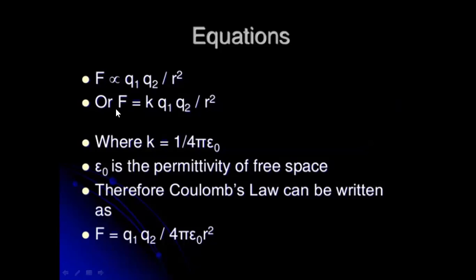If we further simplify, we have K as your constant — Coulomb's constant — multiplied with Q1 and Q2 over the distance of separation squared. Coulomb's constant simplifies to 1 over 4 pi epsilon-naught, where epsilon-naught is the permittivity of free space. Therefore, Coulomb's Law can be written in this form.